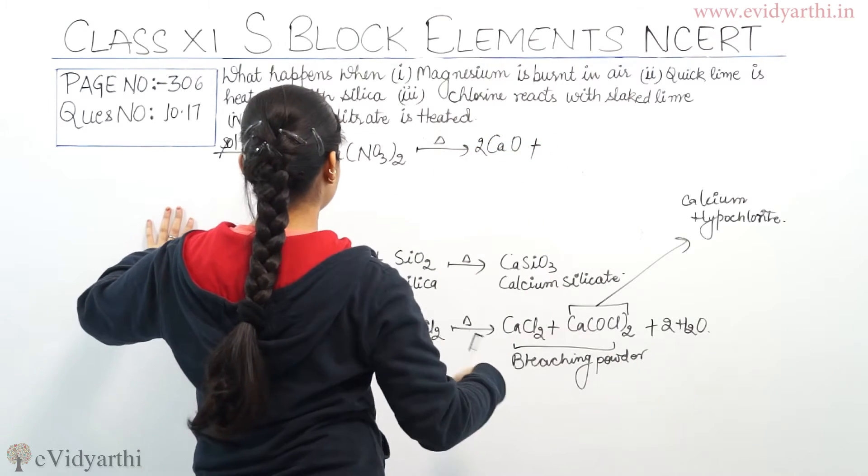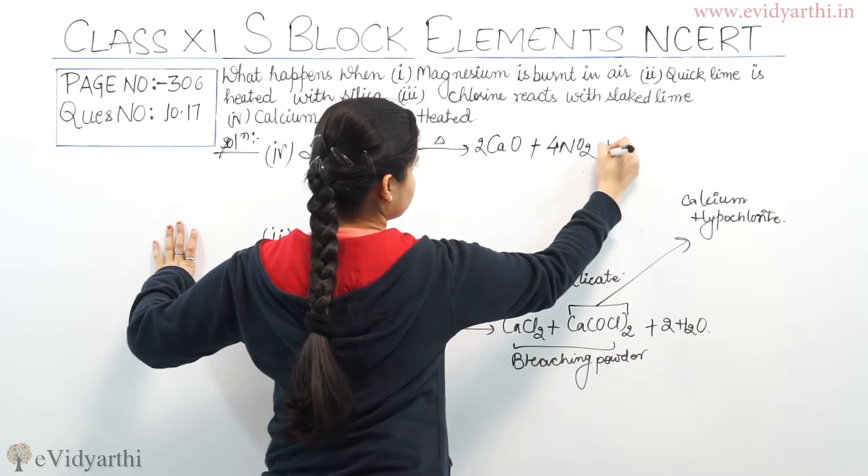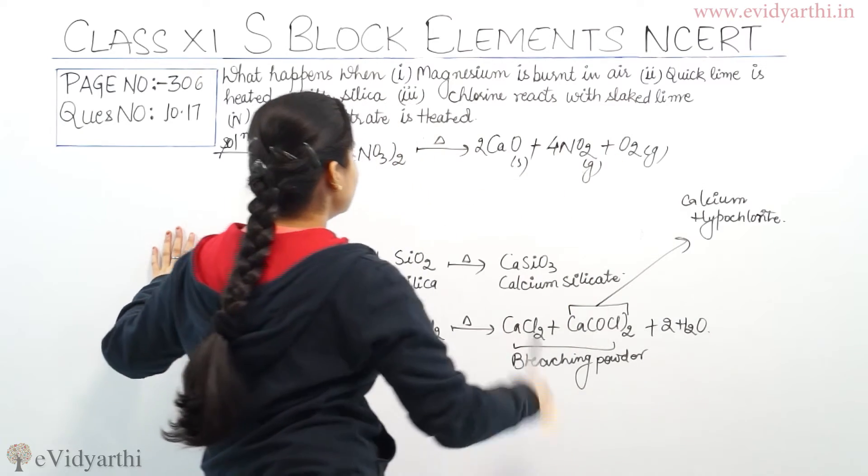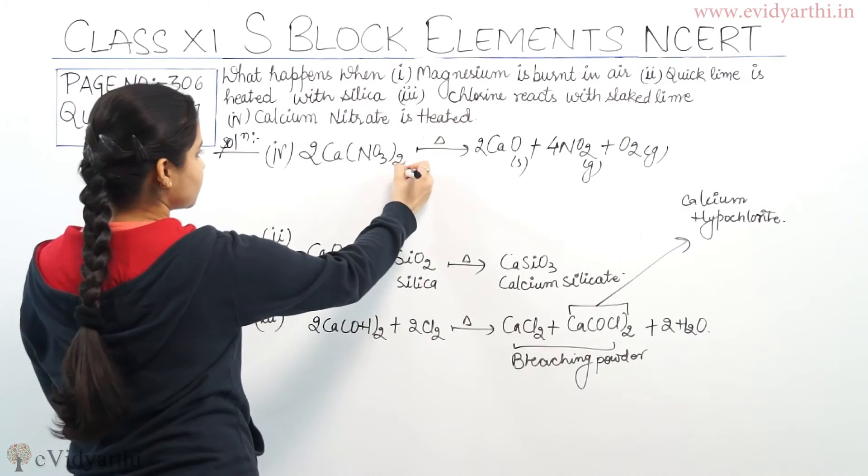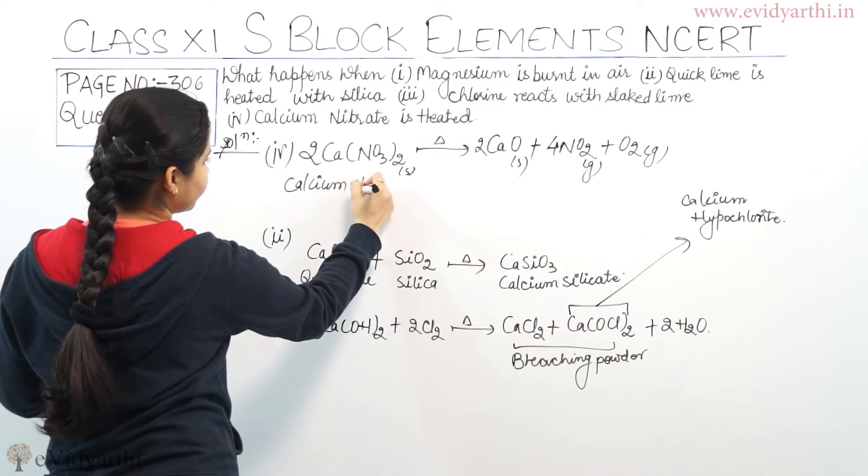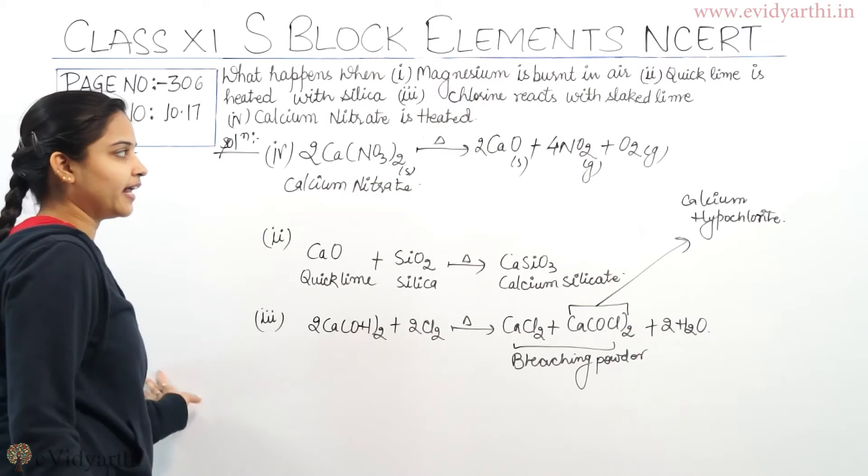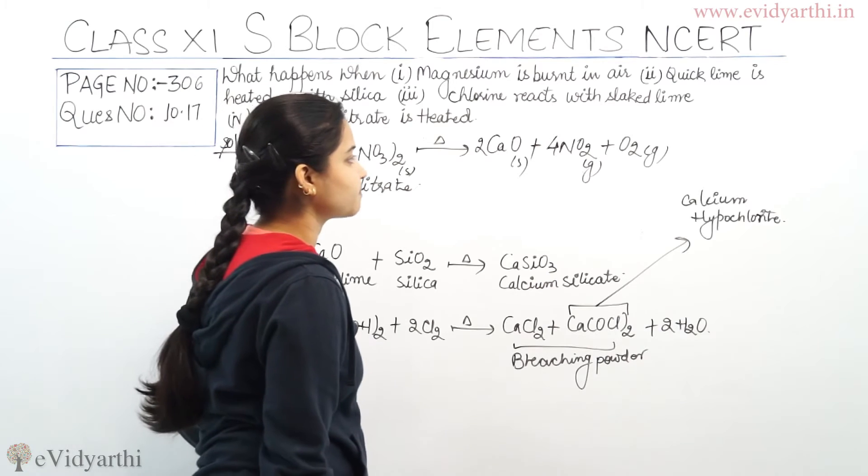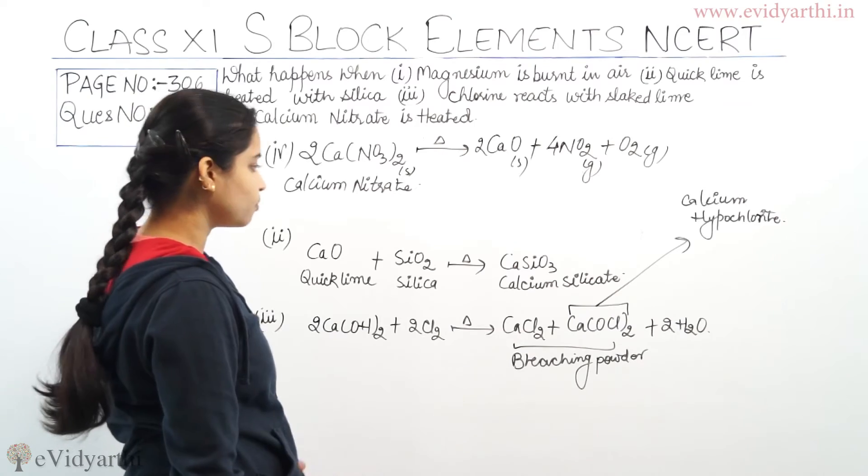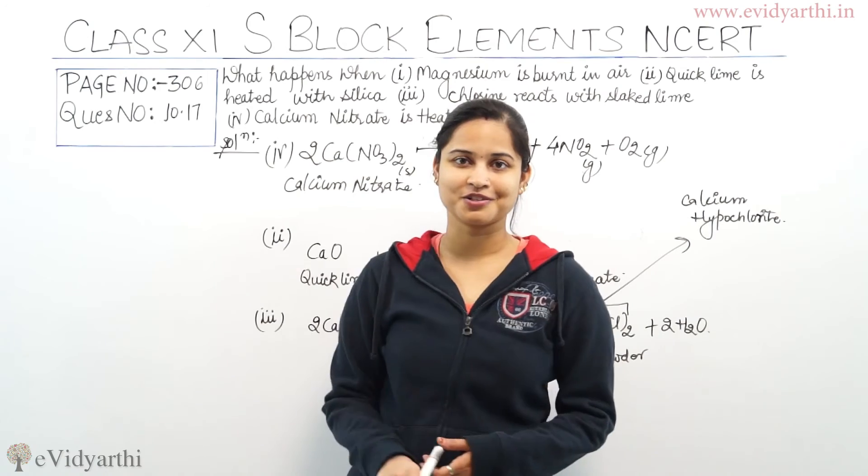We will be getting 2CaO plus 4NO2 plus O2 which is in gaseous state. When we heat calcium nitrate, we get twice of calcium oxide plus four NO2 gas plus O2 gas. I hope these four reactions which were asked and which I have solved on the board are clear to you.